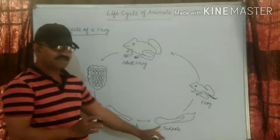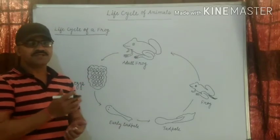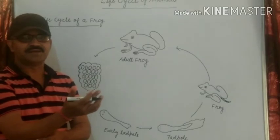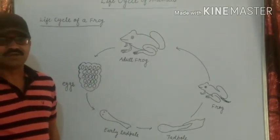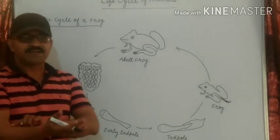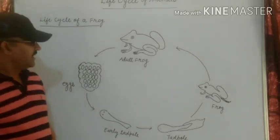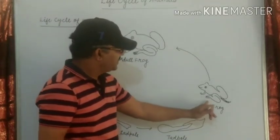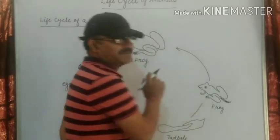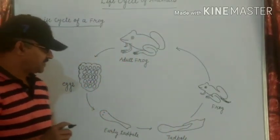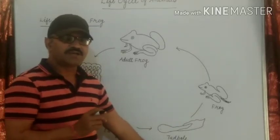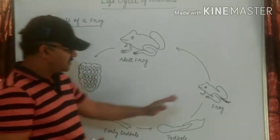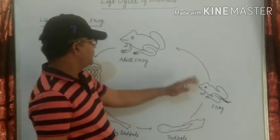As the tadpole grows, in this stage it becomes bigger in size. First, its hind limbs appear, then its forelimbs grow. Its tail becomes shorter and finally disappears, and lungs begin to form. Formation of lungs has started during the tadpole stage.